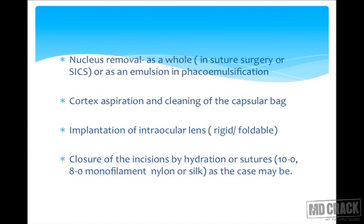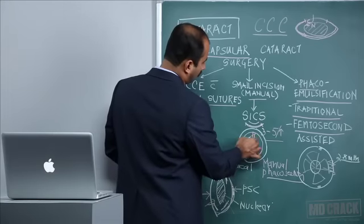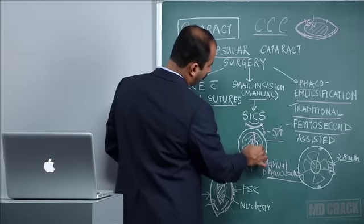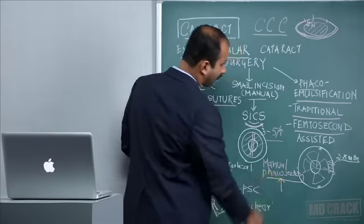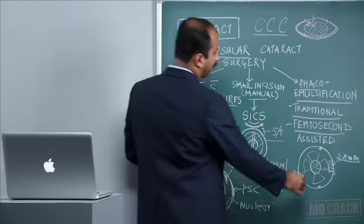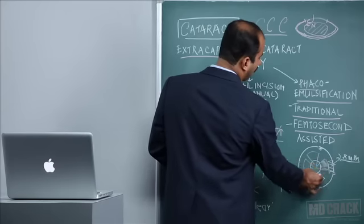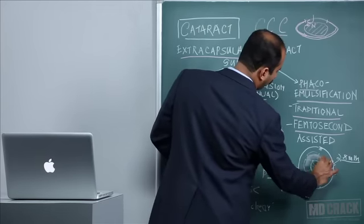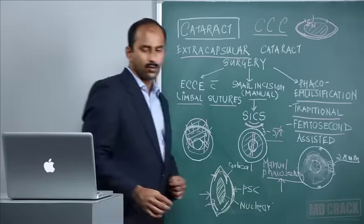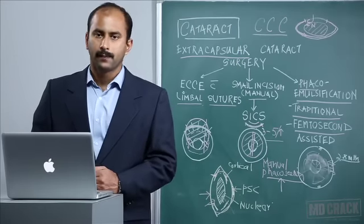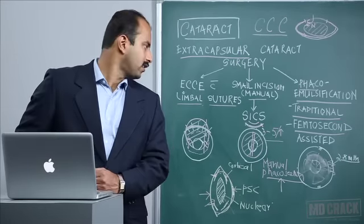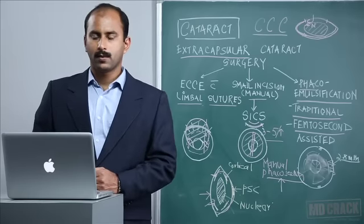Nucleus removal techniques include: prolapse of the nucleus as a whole in conventional surgery, total removal in SICS, manual FACO section with various instruments, or phacoemulsification where no intact nucleus segment comes out — it is pure emulsion using ultrasound energy, managed through a very small incision by making the nucleus into very small pieces.